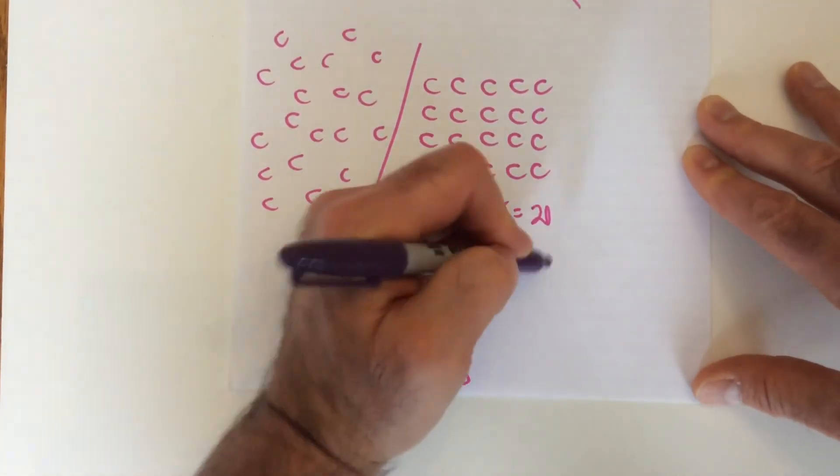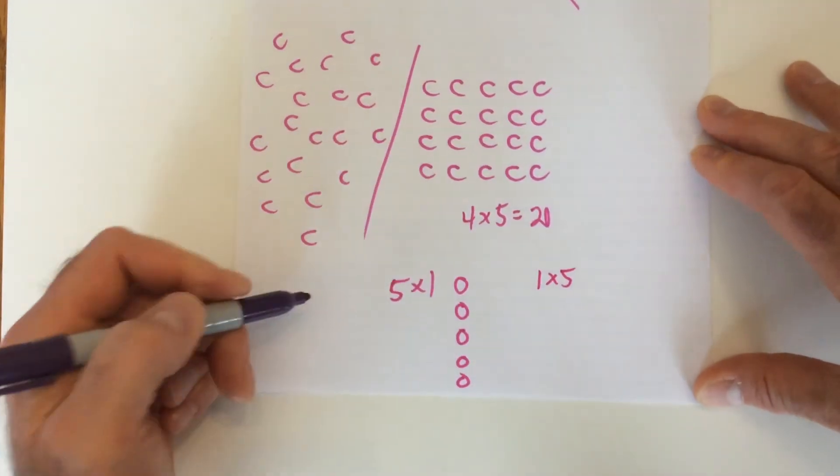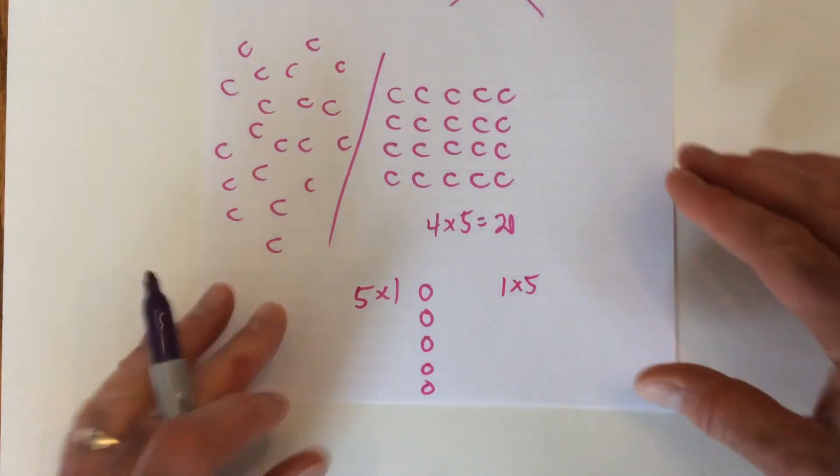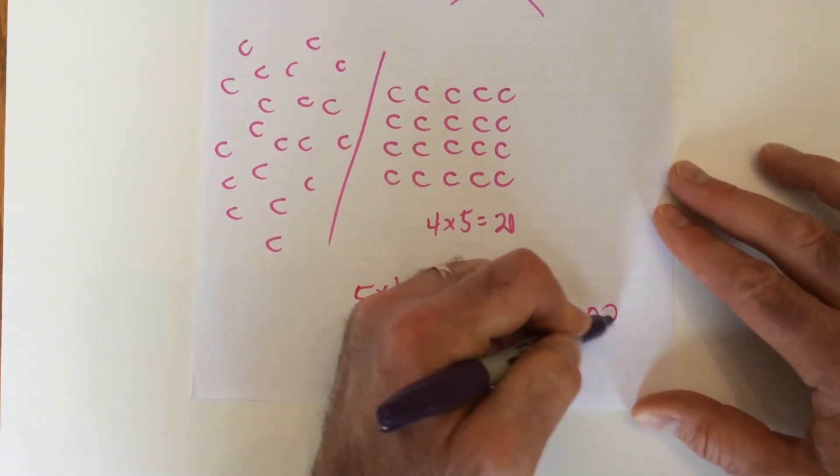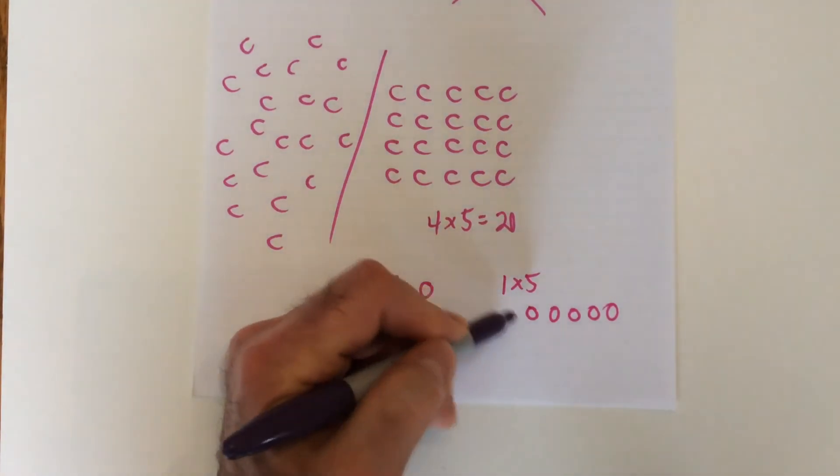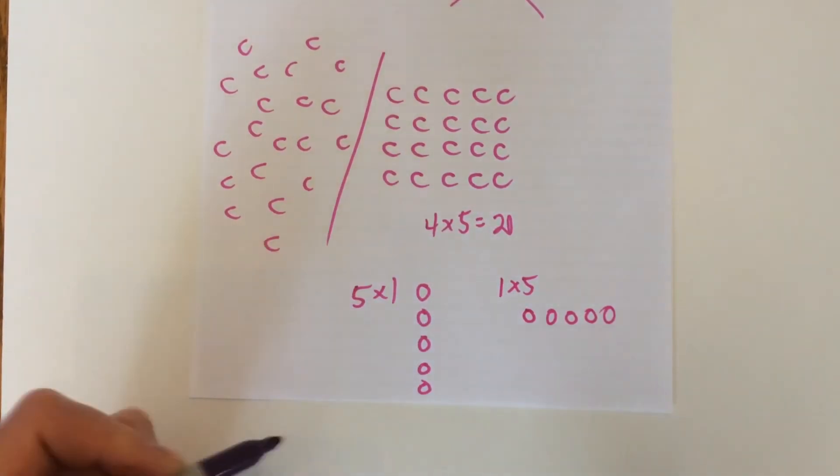So that's what that would look like. Now, same numbers, but it says one row of five, so it's going to look different. Here's what one row of five looks like. So they do look very different. This is one row. This is five rows.